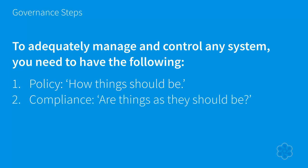Second, we need compliance. If we set up a policy but have no ability to measure whether people are actually following it, the policy has no teeth. For example, if we require all EBS volumes to be encrypted but have no operationalized method to check if they actually are, we don't have an adequate governance system because we can't know if the policy is being followed.